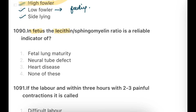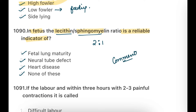Next question: In the fetus, the Lecithin-to-Sphingomyelin (L/S) ratio is a reliable indicator of? Options: Fetal lung maturity, neural tube defect, heart rate, none of these. The answer is Fetal lung maturity. The L/S ratio of 2:1 indicates fetal lung maturity — write your answer in the comment section.